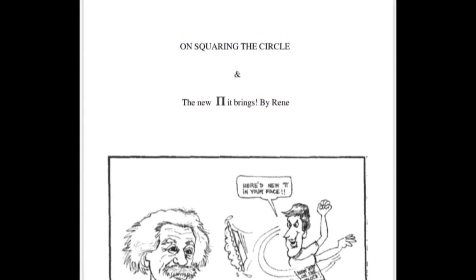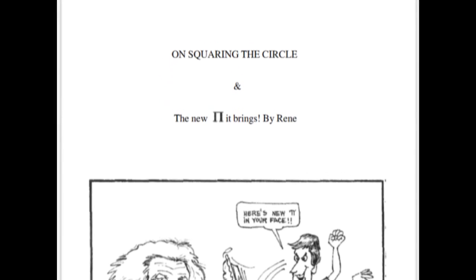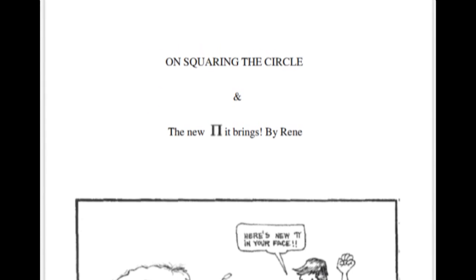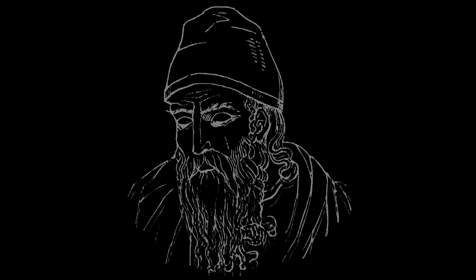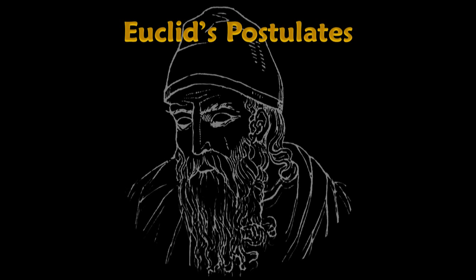Well, before we follow René down this rabbit hole, let's review the ground rules that Gaddy obeyed for his line and circle construction. Around 300 B.C., Euclid of Alexandria gave us five postulates, three of which were useful to Gaddy. Postulates are statements that we assume to be true, unlike theorems which must be proven.